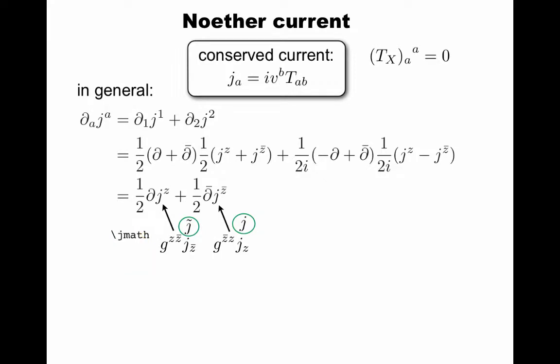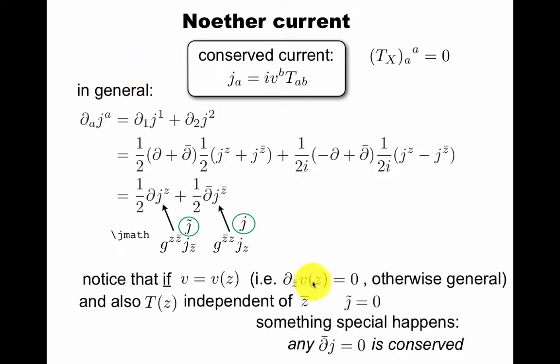Now we notice something: if v doesn't depend on z bar, and t z doesn't depend on z bar, then this component j tilde is zero. If this is not there, any holomorphic j leads to a conserved current. This is a very useful thing to check. The whole thing we just did is just an example that if the current only has the j component and is holomorphic, then it's conserved.